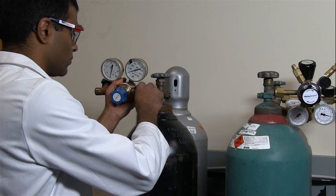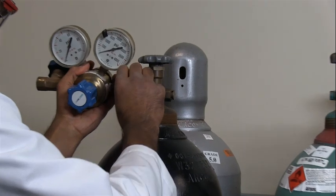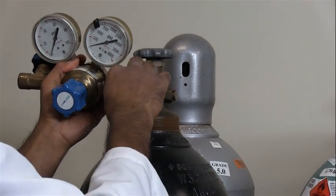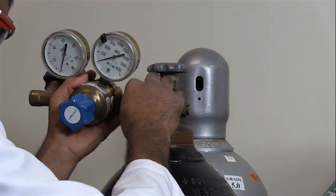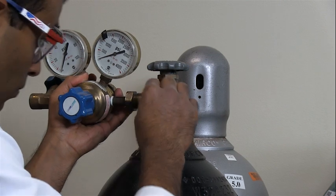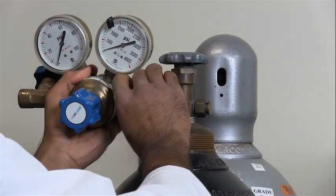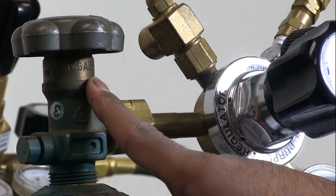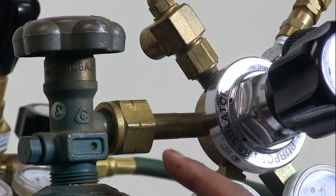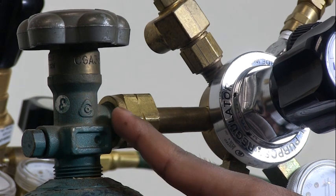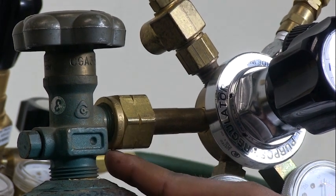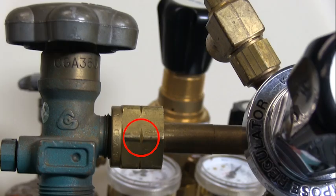Attach the regulator to the cylinder valve outlet. Never force the connection. If the inlet of the regulator does not fit the valve outlet easily, it may indicate the regulator is not intended for use with that gas. Always check for compatibility of equipment and materials before using any compressed gas. Left hand connections are used almost exclusively on flammable gas connections. Left handed connections have a notched groove in the surface.